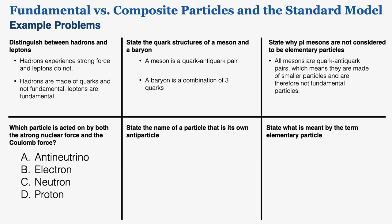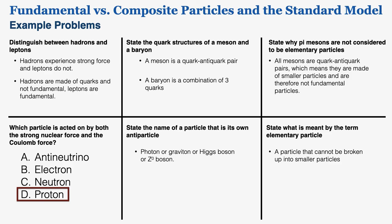Fourth problem: which particle is acted on by both the strong nuclear force and the Coulomb force? An anti-neutrino and an electron are both leptons and don't experience the strong force, so they're eliminated. Protons and neutrons are both baryons experiencing the strong force, but the Coulomb force only acts on charged particles. A neutron is neutral, but a proton is charged — so the answer is a proton. Fifth: name a particle that is its own antiparticle — a photon, graviton, Higgs boson, or Z0 boson. Sixth: an elementary particle is simply one that cannot be broken up into smaller particles.